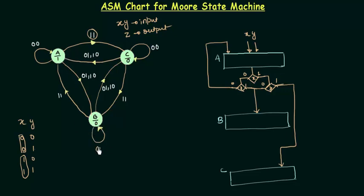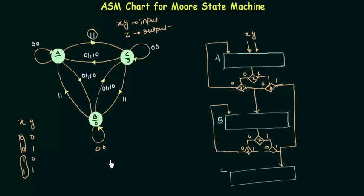Now we will analyze state B. I'll make the same decision boxes here: X, then Y, and again Y. If the input is 00 I will remain on state B, so I connect that path back to B. If the input is 11 I will go to state A. And if the input is 01 or 10 I will go to C, so I connect those two paths and give them to C. We are done with states A and B.